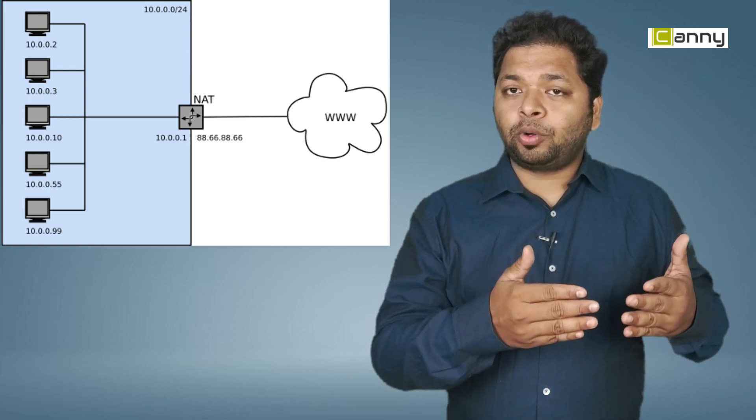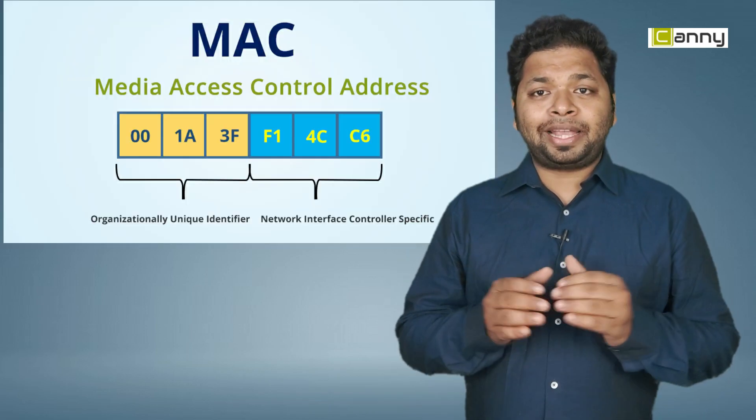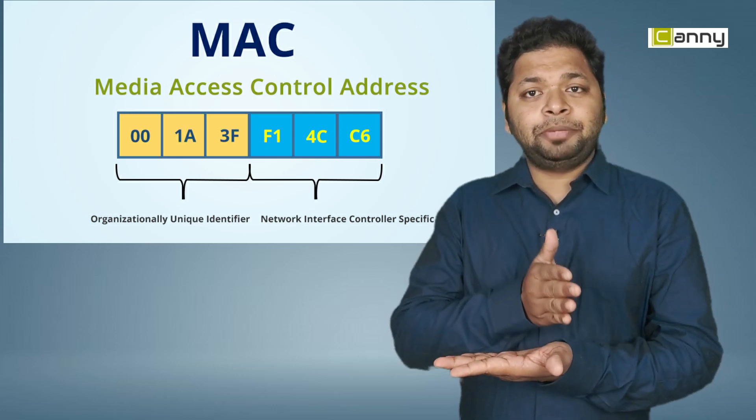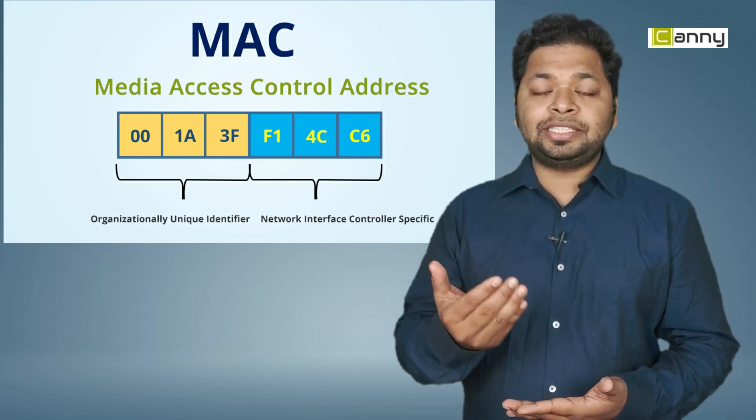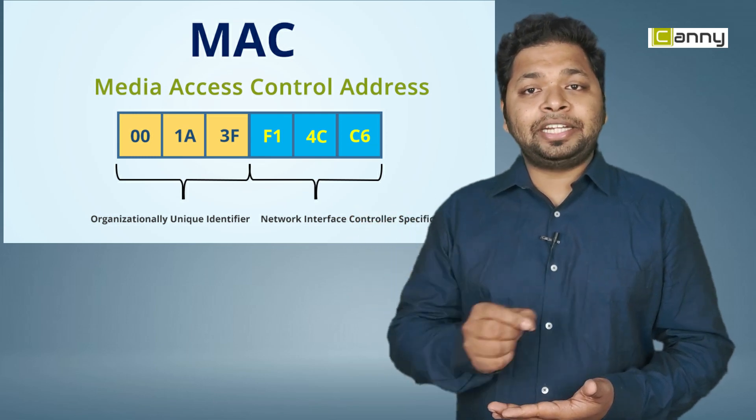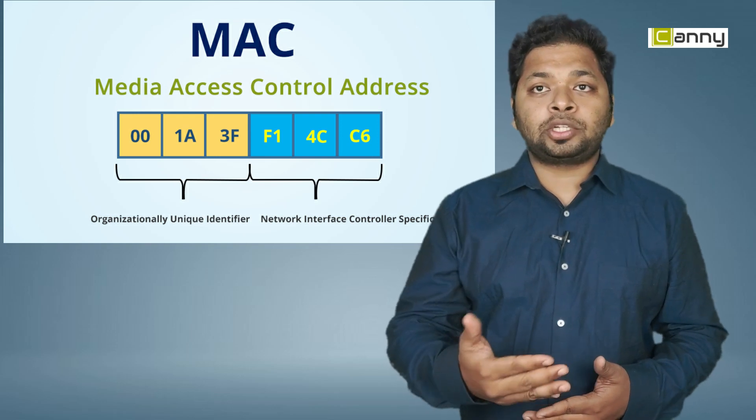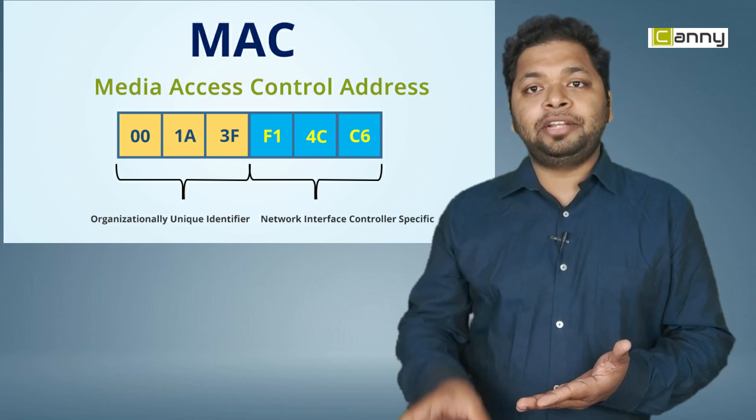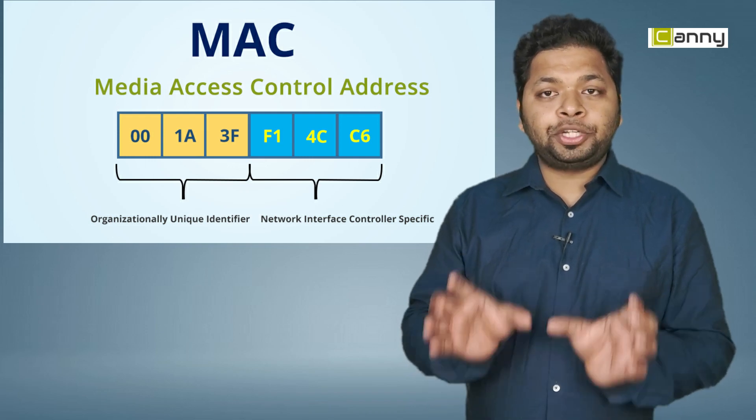Now coming to the MAC address, MAC address is 48 bit or 6 byte. Out of that 6 byte, break it into two parts. The first three bytes are used for OUI. What is OUI? OUI is basically organization unique identifier. It identifies a unique organization which is actually selling that product or selling that network device. And the last three bytes are used for different devices that are being sold by that organization.